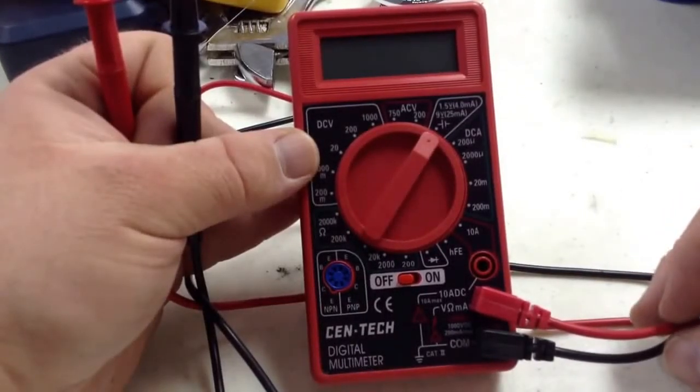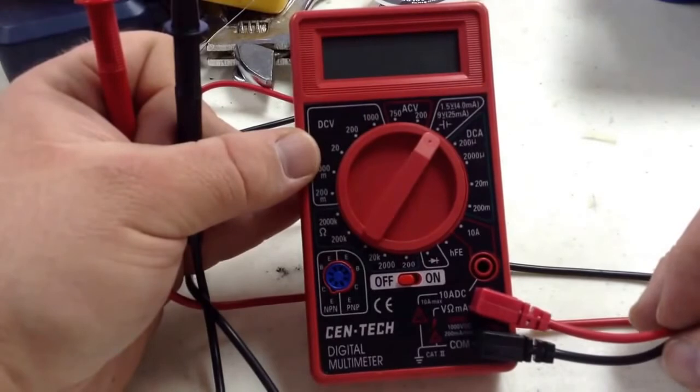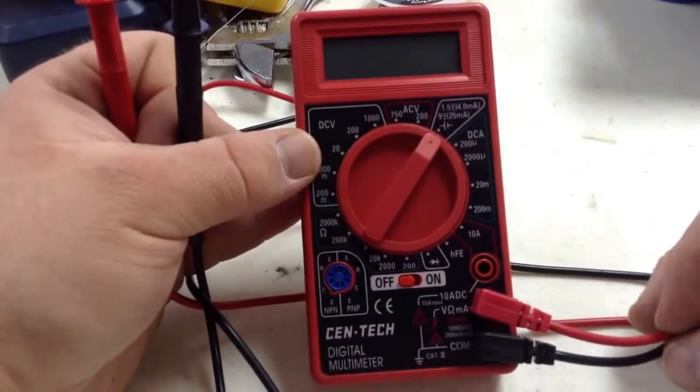Today we're going to show you how to use the Cen-Tech Digital Multimeter to test how much battery life is left in a AA, AAA, or 9V battery.